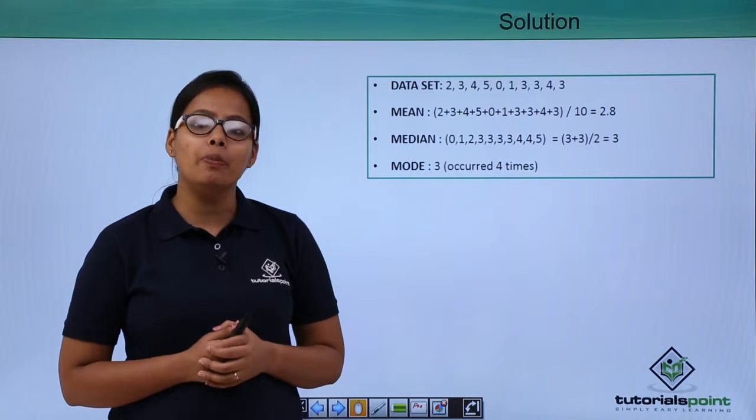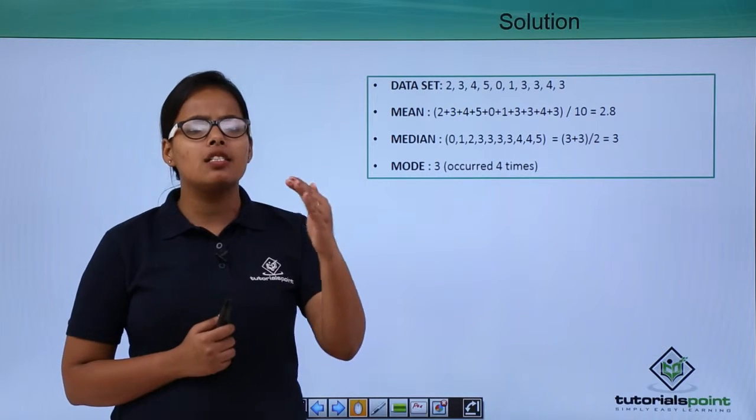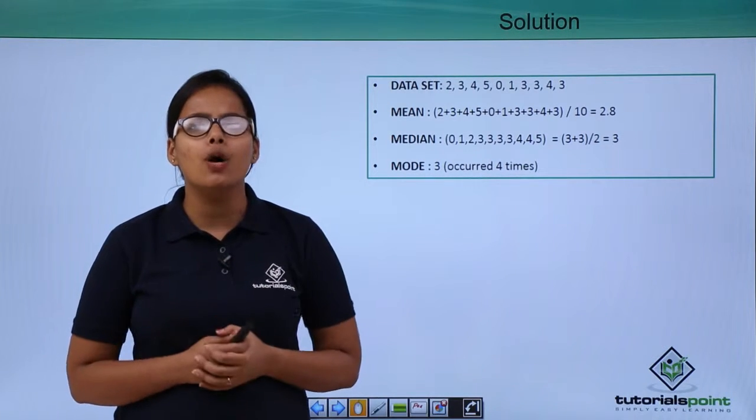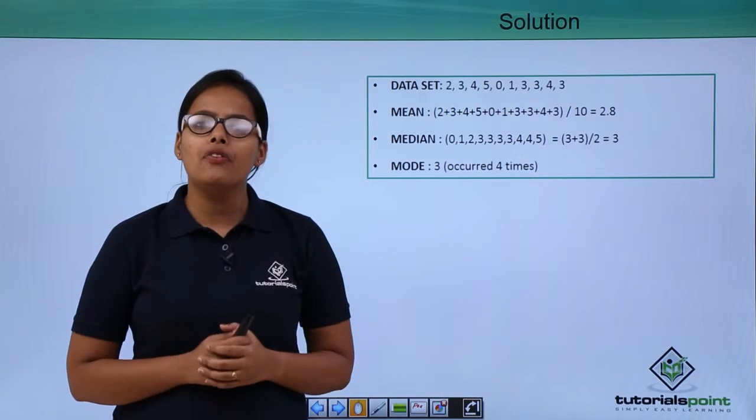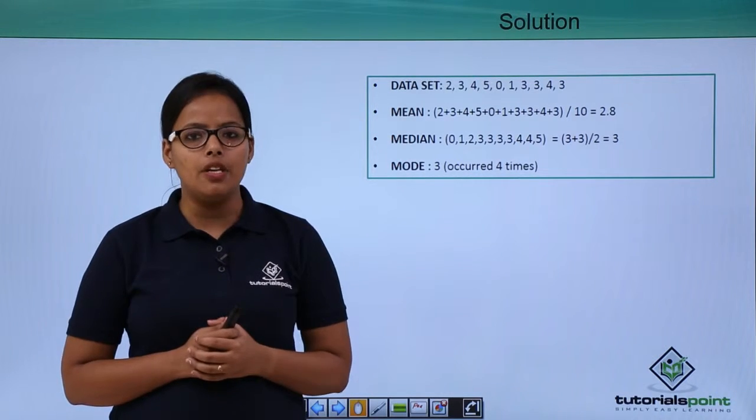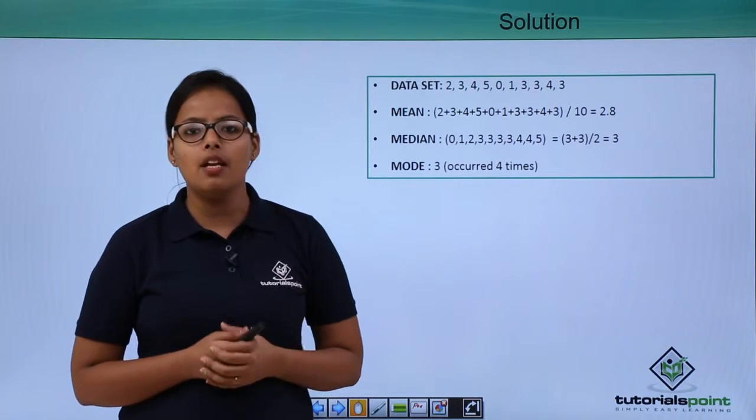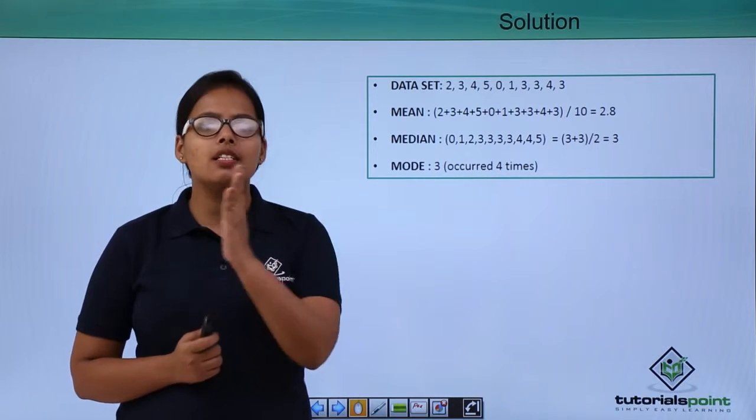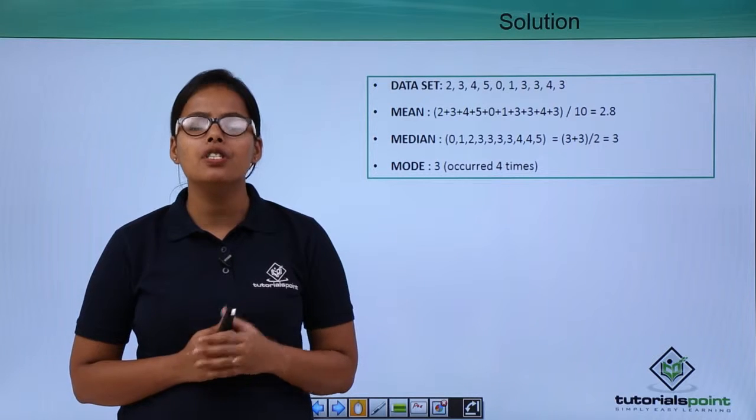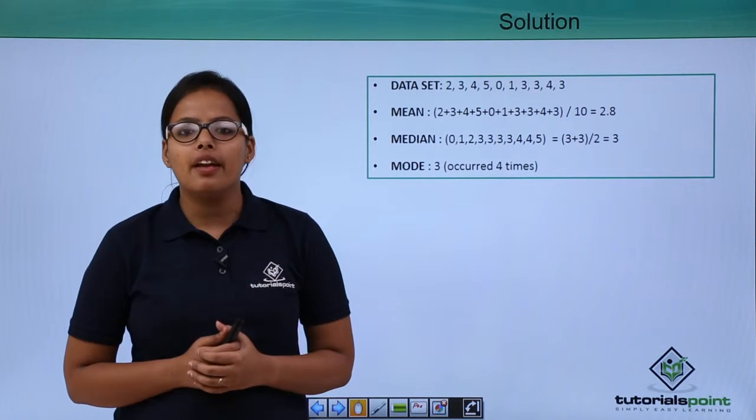Now, how are you going to find out the median? As I have already discussed the procedure with you. If the number of entries in the sample space are even, as you know the number of entries here are 10, which is even. So what you'll do? Let's arrange the data in ascending order first and after that define the rank.